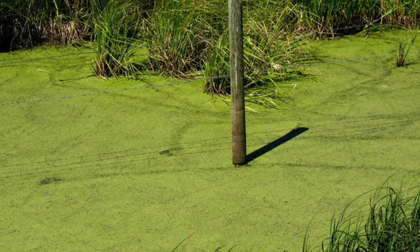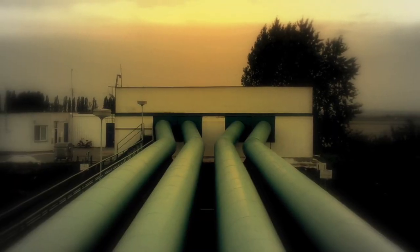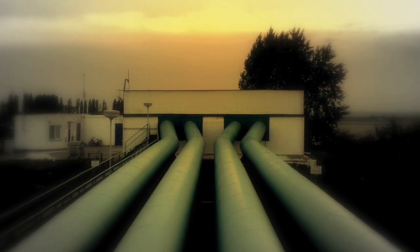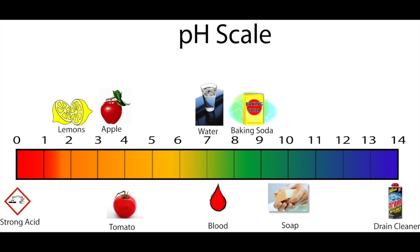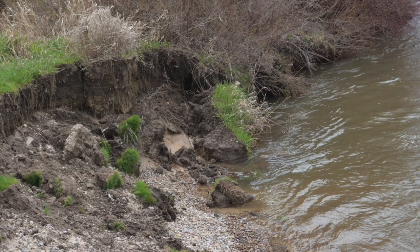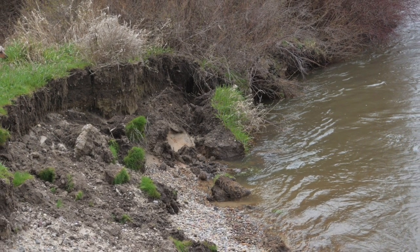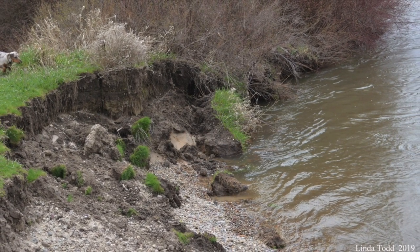This leaves less oxygen for our macroinvertebrates. Additionally, when companies dump industrial pollutants, chemicals, and mining runoff into our rivers, streams, and ponds, these pollutants can lower the pH of the water source, making the water more acidic. The acidic water will weaken the shells and exoskeletons of the macros, eventually killing them. Lastly, when vegetation near water sources — like trees, grasses, and shrubs — are removed, this takes away food sources and breeding grounds for our macros.